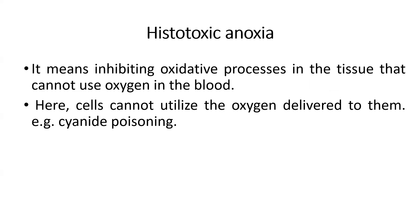The next type is histotoxic anoxia, which is very important. Here cells cannot utilize the oxygen delivered to them — the oxidative process in the tissue is inhibited. A classic example is cyanide poisoning, where there is inhibition of the cytochrome oxidative system. This is also an important MCQ point: in cyanide poisoning, histotoxic anoxia occurs.